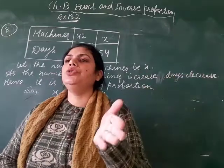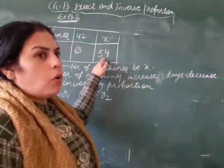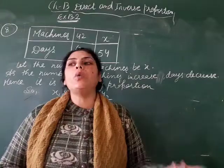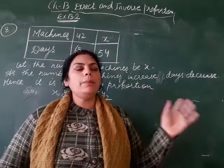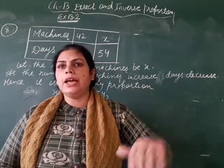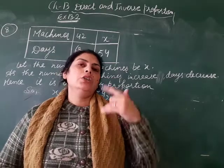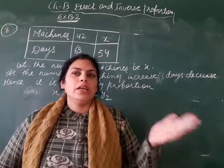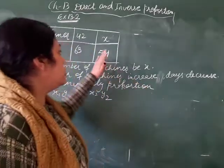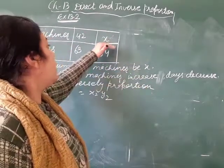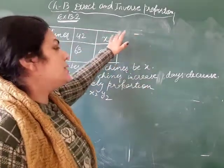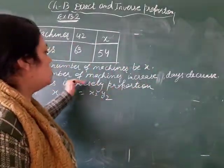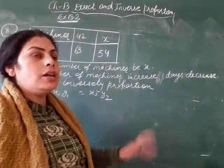But you have to finish your work in 54 days. So how many machines would be required? As the number of machines increases, the number of days decreases. Machines will be more, so number of days will decrease. So this is inversely proportional.